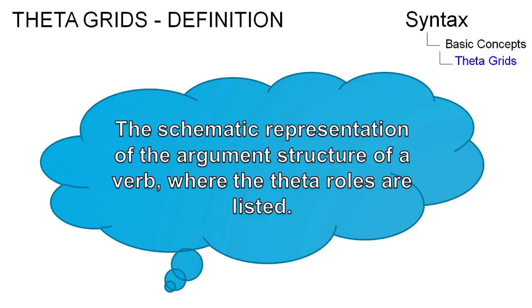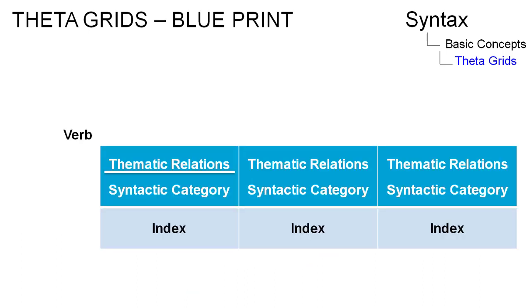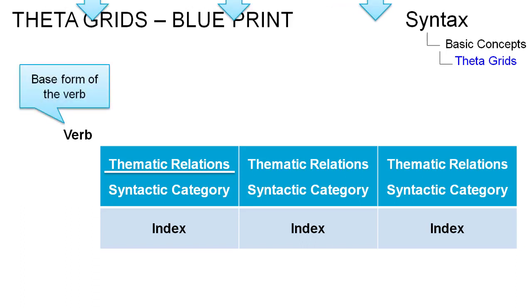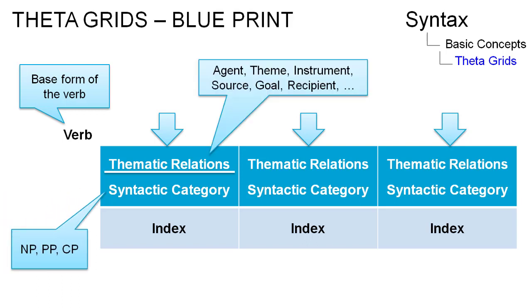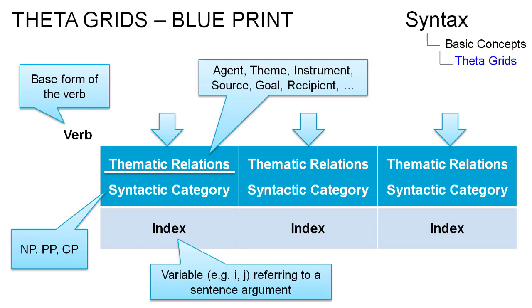A theta grid is a schematic representation of the argument structure of a verb, with a theta role assigned to each argument. It consists of several components: the base form of the verb, a column for each of the arguments that the verb requires, the thematic relations of the argument, its syntactic category, and the argument's index. Each column represents the theta role assigned by the verb.